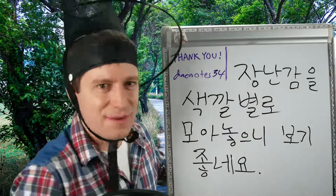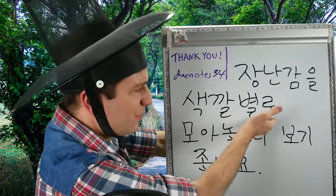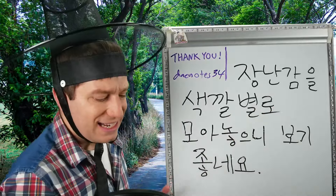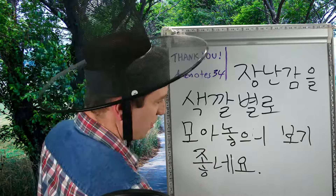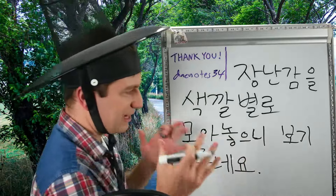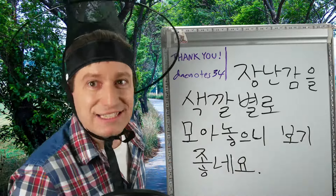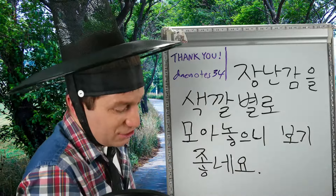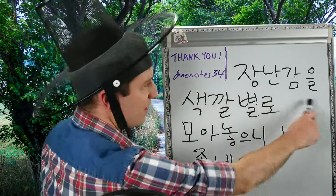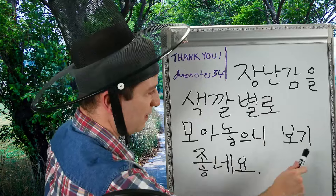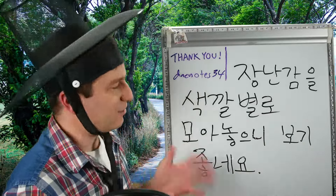장난감 is a toy. 색깔 is a color. 색깔별로 — by color. 모아놓다 — organizing, gathering everything together. 보기 좋다 — literally looks good, it looks nice. So it looks nice when you organize all of your toys by their color. I organized my toys by color and it looks really nice.